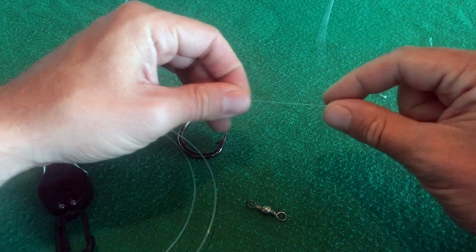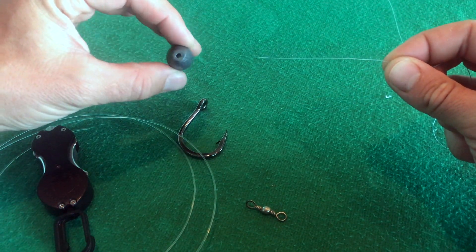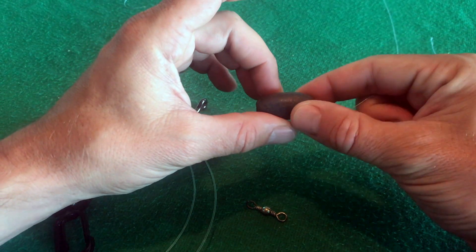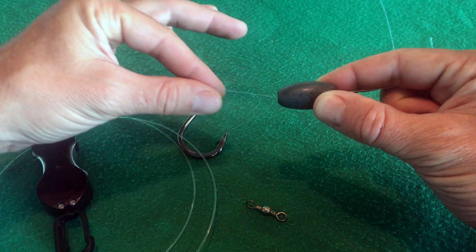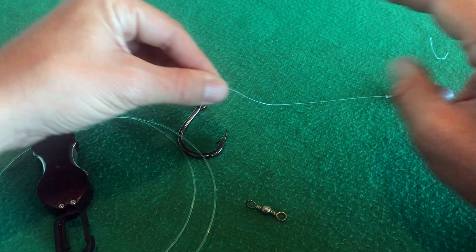So the very first thing we're going to do is put our sliding egg weight—we've got an egg weight right here—through our main line. This is the main line that goes to the rod end. So that is how we want that to slip around.